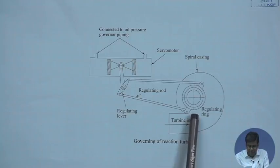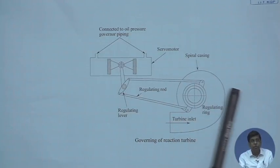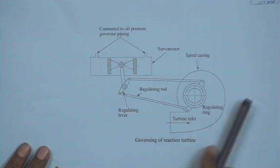Apart from the wicket gate mechanism, there is another mechanism acting in parallel — a relief valve or pressure regulator in the main line. This diverts water another way, not allowing it to reach the turbine inlet. It is similar in concept to deflector vanes used in Pelton turbines, which deflect the jet away from the runner before it reaches the turbine, so the water goes a different way and cannot reach the turbine. The pressure regulator or relief valve does the same thing in reaction turbines.